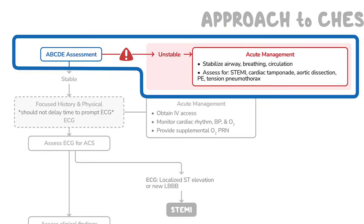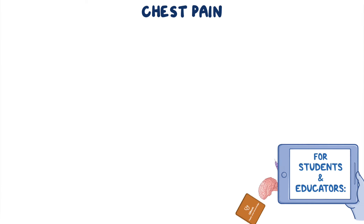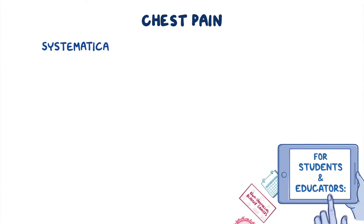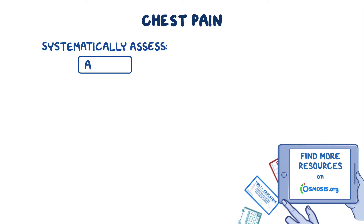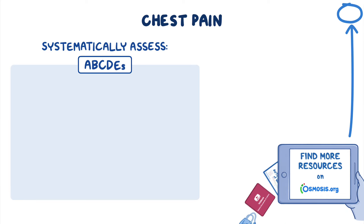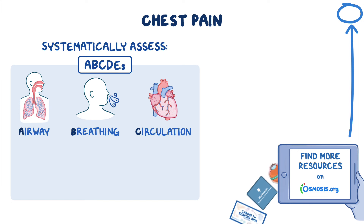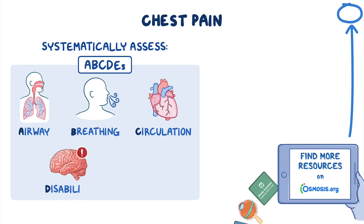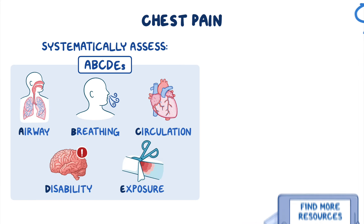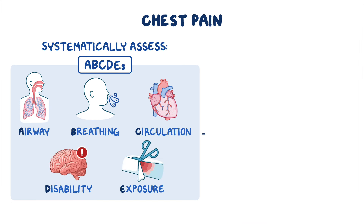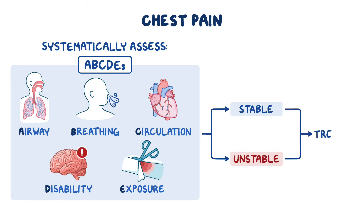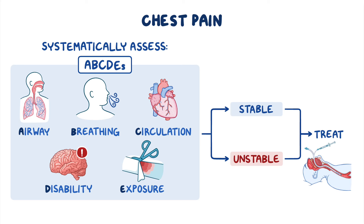Your first step in evaluating a patient presenting with chest pain is to systematically assess their ABCDEs, which stands for airway, breathing, circulation, then disability, and exposure. This helps you judge if the patient is stable or unstable, so you can treat any issues at each step. Your patient may, for example, require endotracheal intubation.